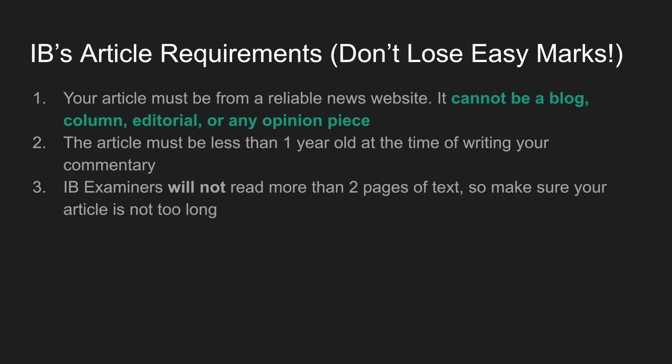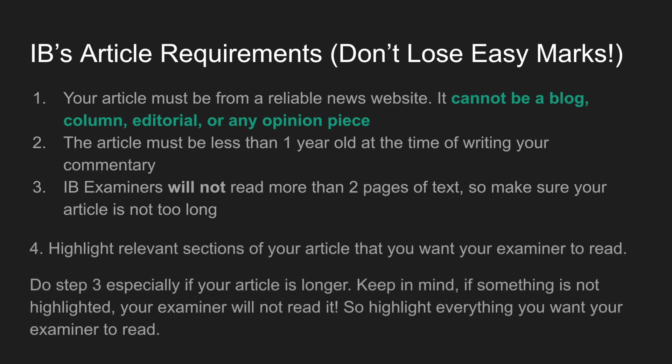Number two, the article has to be less than one year old at the time of writing your commentary, and it can't be about a historical economic issue like the Great Depression in the 1930s — it has to be about something happening in the present. Number three, IB examiners will not read more than two pages of text, so make sure your article isn't too long. If it is a bit long, you can highlight the relevant sections you want your examiner to read.